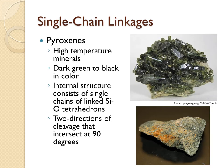Next are the single-chain tetrahedron linkages. The most common of these are the pyroxenes. Just like olivine, pyroxenes are high temperature minerals. They are dark green to black in color and are rich in iron and magnesium as well. The main difference is that they have two directions of cleavage that intersect at 90 degrees.